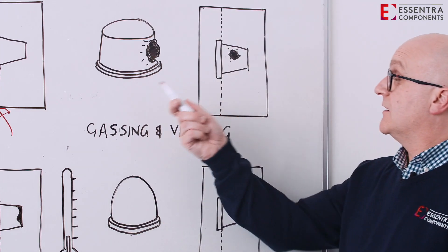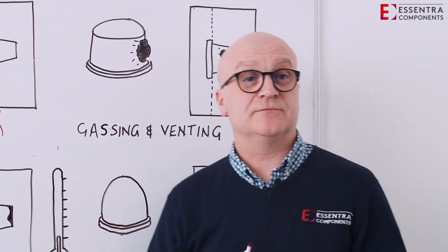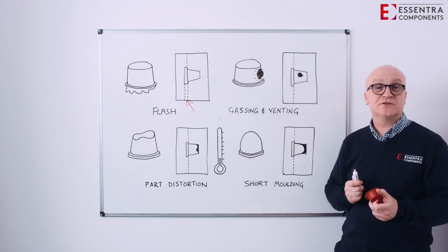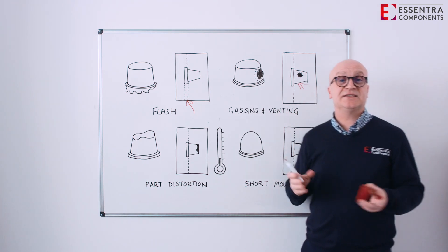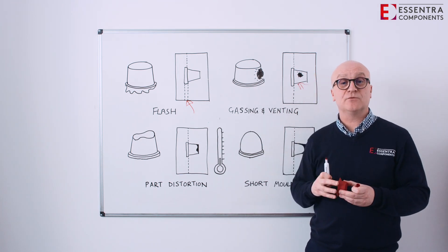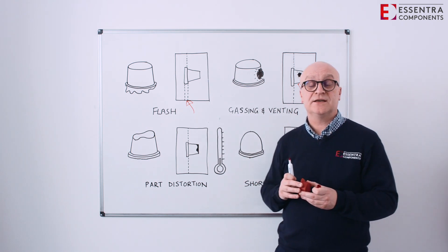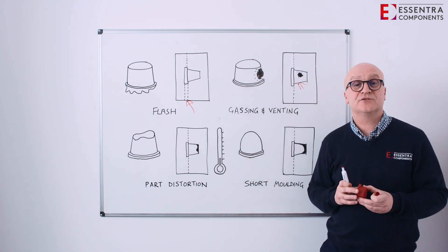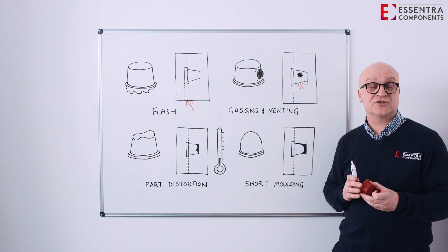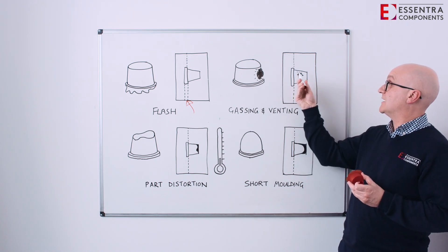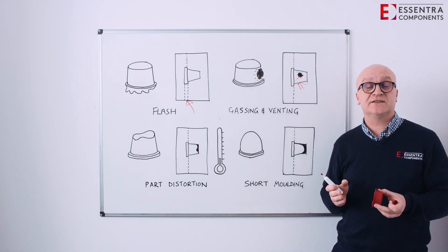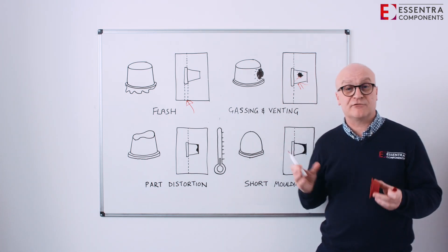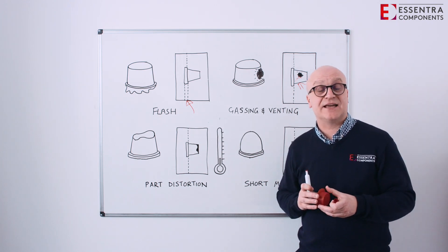Let's take a look at what we call gassing and venting. As the material flows into the tool, into the cavity, obviously the cavity is empty. We start injecting the molten plastic into the tool. The air has to escape from the tool and if it doesn't it causes a problem and we can get some defects on the part. It's really important that we have good tool maintenance and the correct venting to let the air escape.